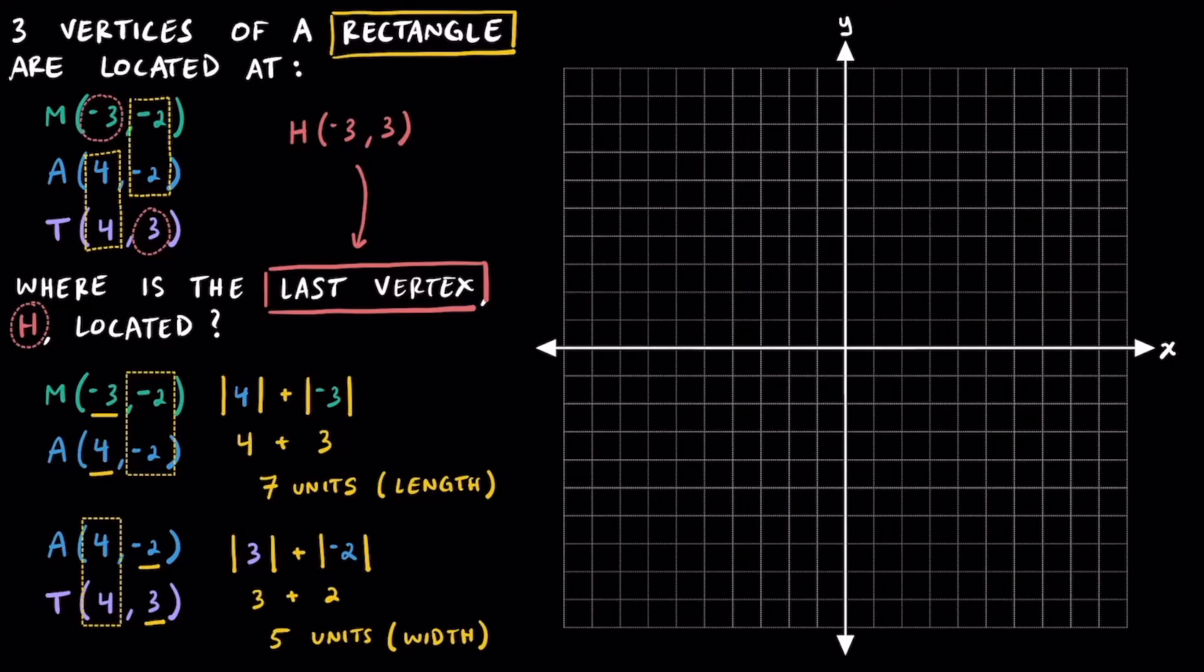And just to back this up, let's take a look at it on a coordinate plane. To plot point M, we'll start at the origin and move 3 units to the left and 2 units down and plot M in quadrant 3.